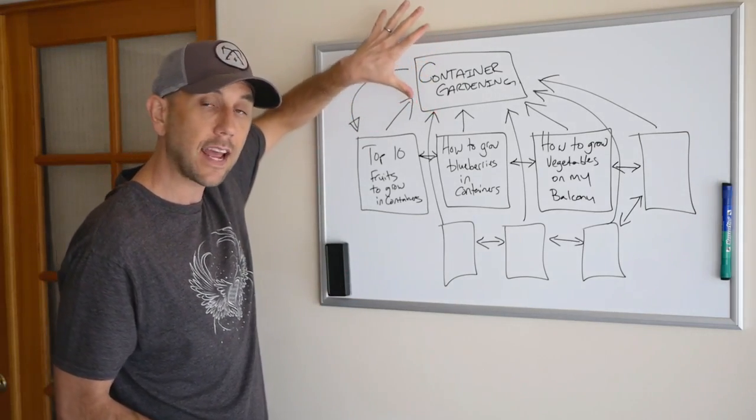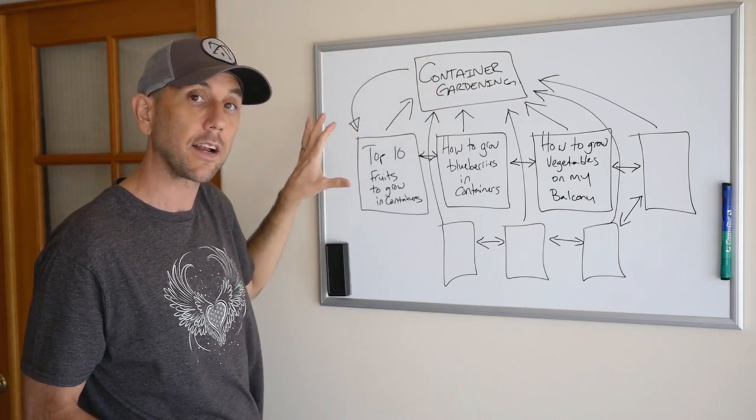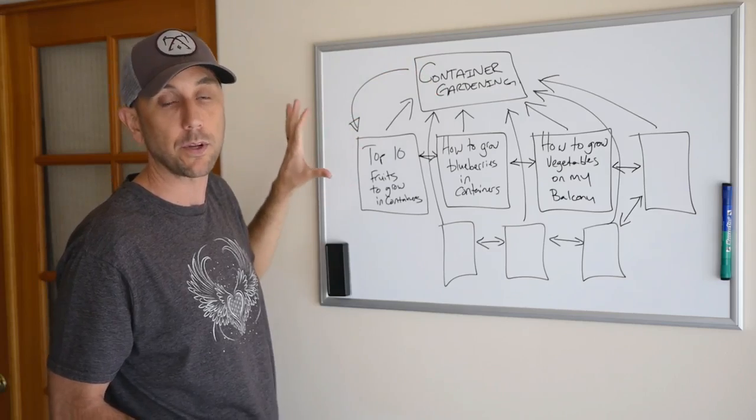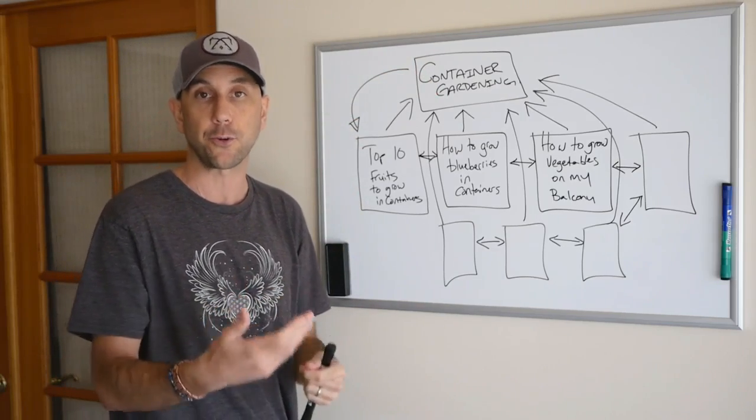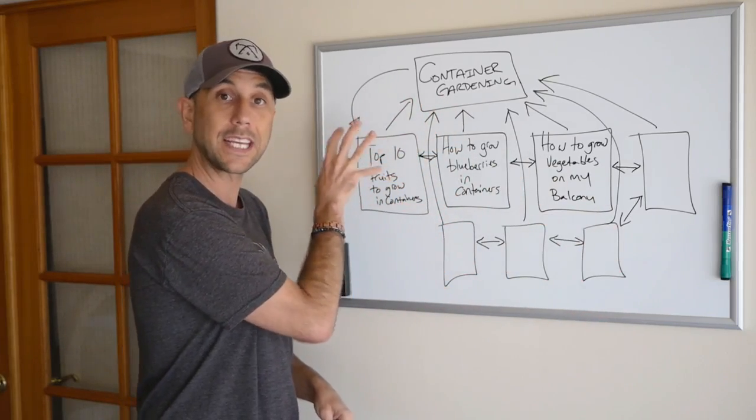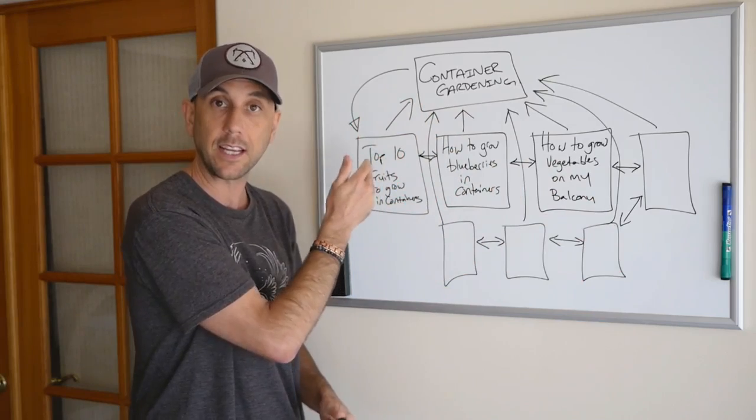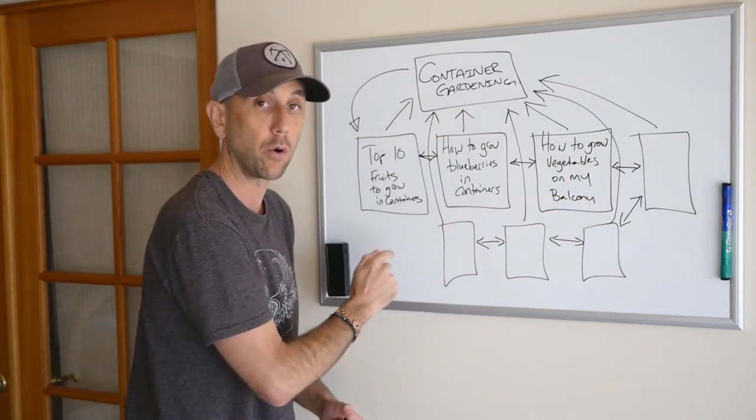When they find your main container gardening post, they're going to come down and follow the link inside of that post and reach your sub structure. This is the silo you're introducing the search engine spiders to your lower structural content. Once they're here, you need to make sure the linking is done in a manner that they will work their way to every single post.